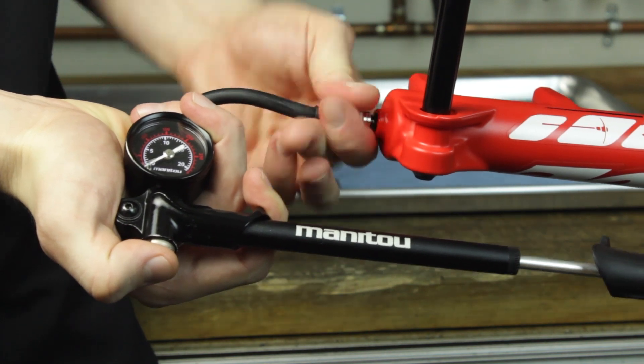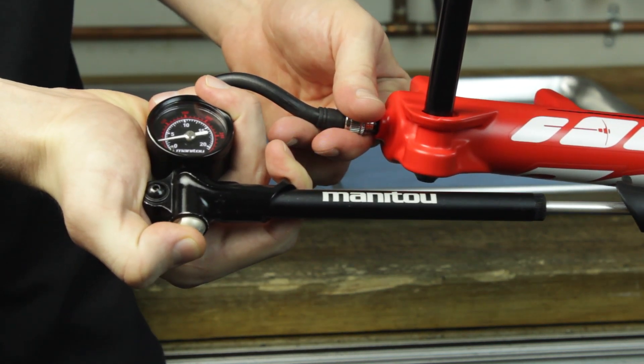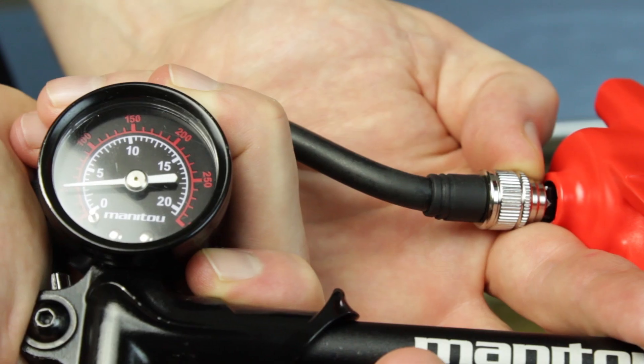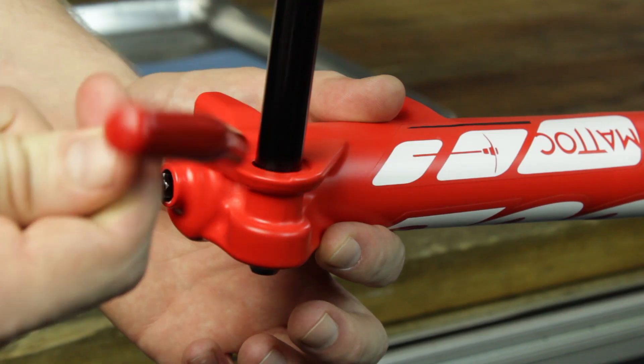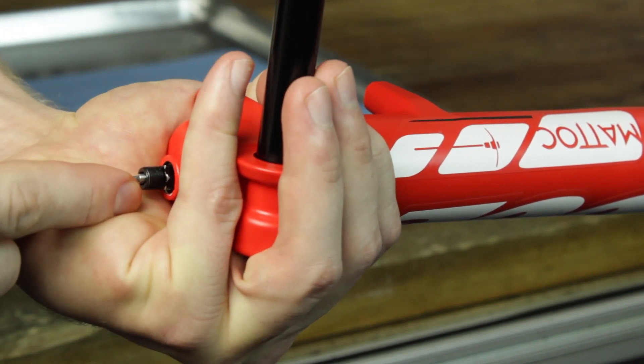Attach a shock pump to the valve stem and depress the pump pressure relief button to depressurize the air chamber. Remove the shock pump and depress the valve stem with an Allen wrench to be sure all of the pressure is purged from the system.